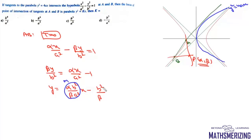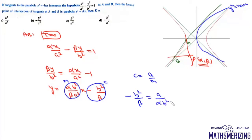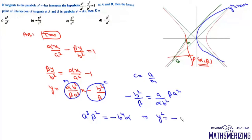Using the condition of tangency for a parabola, c = a/m. With c = −b²/β and m = αb²/(βa²), we get the equation a³β² = −b⁴α. So the locus is y² = −b⁴/a³ · x, meaning the value of k is −b⁴/a³. That's option B.